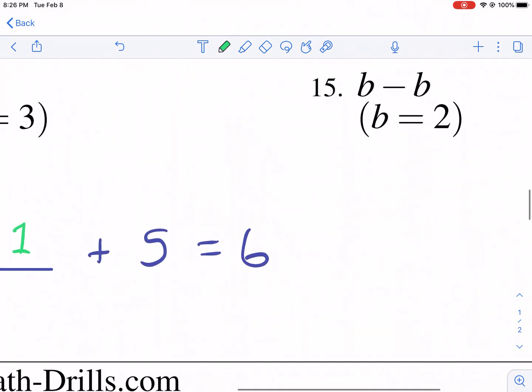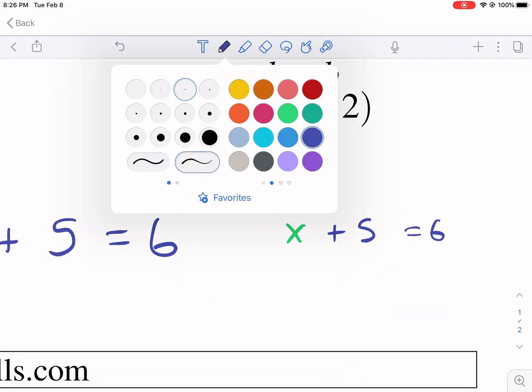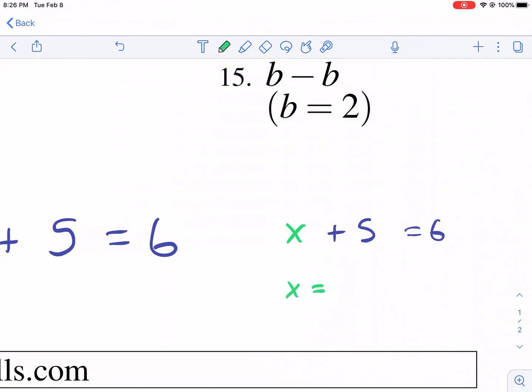A variable just takes the place of that. So we could have a, for example, or the most commonly used one is x. And then we can say x plus 5 equals 6. And x is still equal to 1. X's value is 1. We know that 1 plus 5 equals 6. And that's why we use letters.